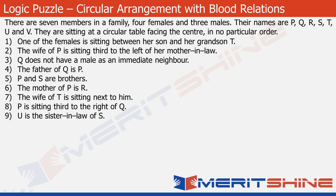I want to start with statements four, five, and six, which are pretty straightforward — they are simple blood relations. Statement four says that the father of Q is P. So let's put Q here, and this would be P. I'll write M here to denote that P is a male.